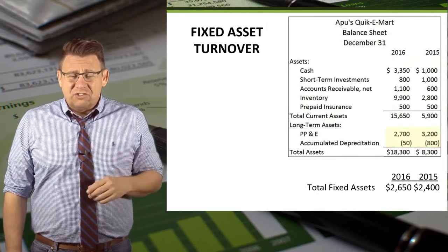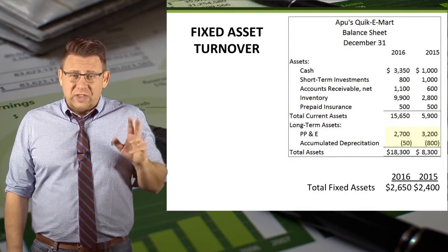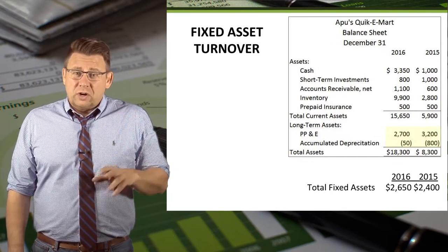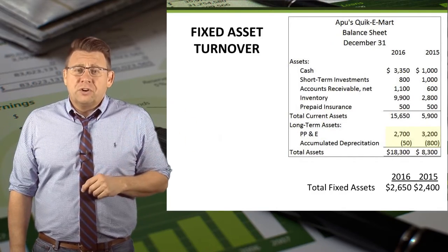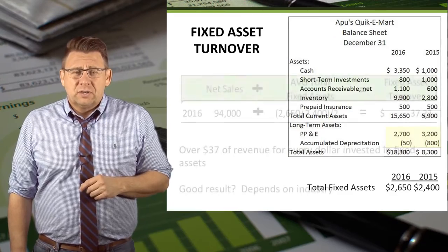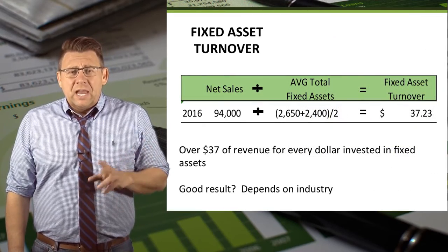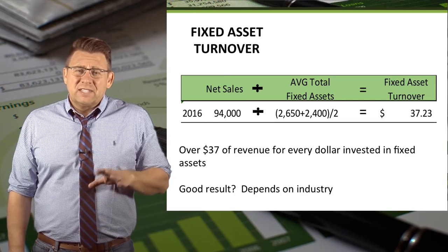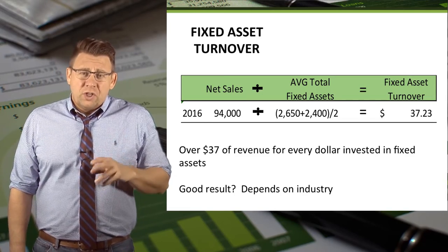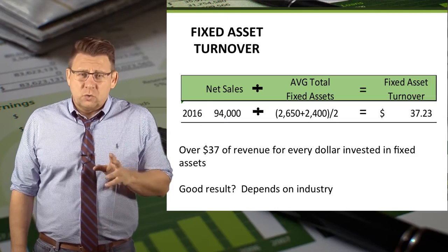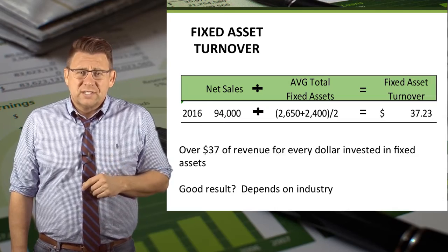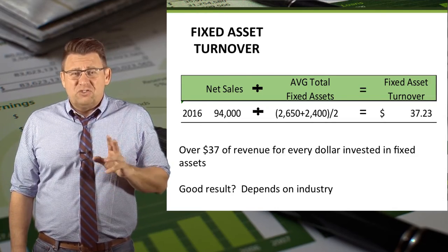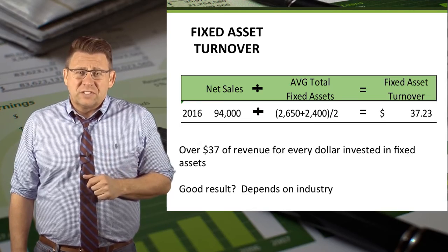Here is the asset section of the balance sheet. We will use the highlighted fixed asset amounts, which are totaled on the slide, to determine the fixed asset turnover. For 2016, net sales divided by average fixed assets gives us a fixed asset turnover of $37.23.